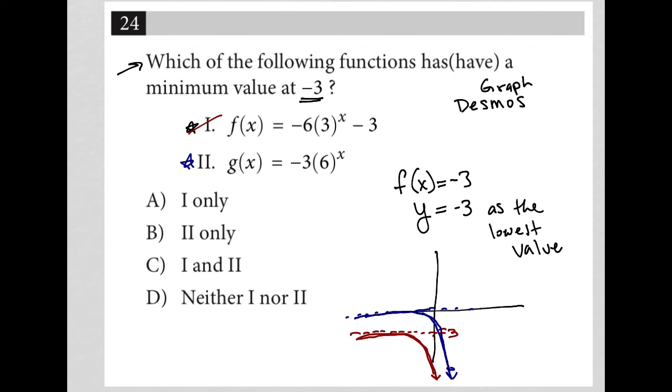So once again, negative 3 is not the lowest value. So 2 is gone as well, which means only answer choice D would make any sense. It can't be either of those things, so it's neither 1 nor 2 in this case, choice D.